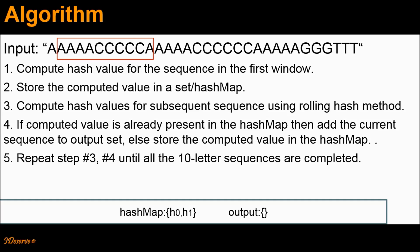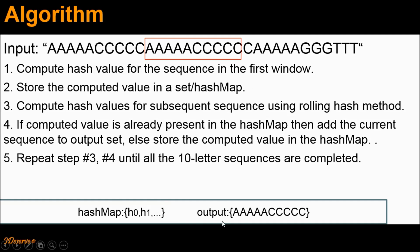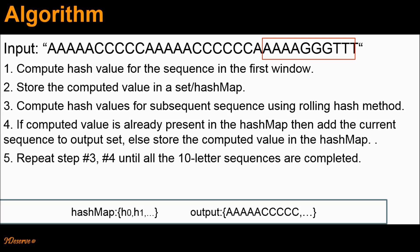When we continue with steps 3 and 4 in the same manner, at this particular point the computed hash value for this new sequence would be the same as h0. Why? Because the sequence we are looking at — that is 5 A's followed by 5 C's — is the same as the first 10-letter sequence. Notice that the first 10 letters are 5 A's followed by 5 C's, and we have already computed and stored the hash value for that. As per step 4, if the computed value is already present in the hash map — that would be h0 — then we add the current sequence to the output set. So this particular sequence is now added to the output. We continue computing hash values for all 10-letter sequences using this rolling hash method and then return the output set from the function.